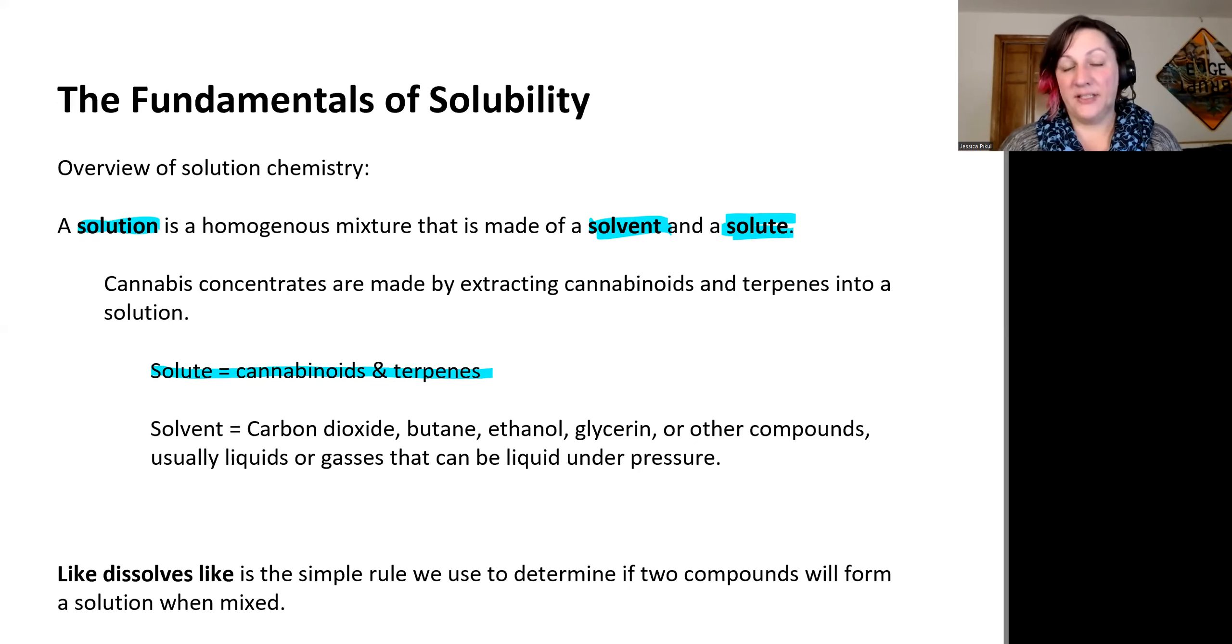The solvent will be whatever we are using to do the extraction with. We'll see things like carbon dioxide, butane, and ethanol as the focus of this set of lectures. But there are other solvents used too—glycerin is one that's used to make tinctures. Most of these are going to be either liquids or gases that can be liquefied or can be a supercritical fluid.